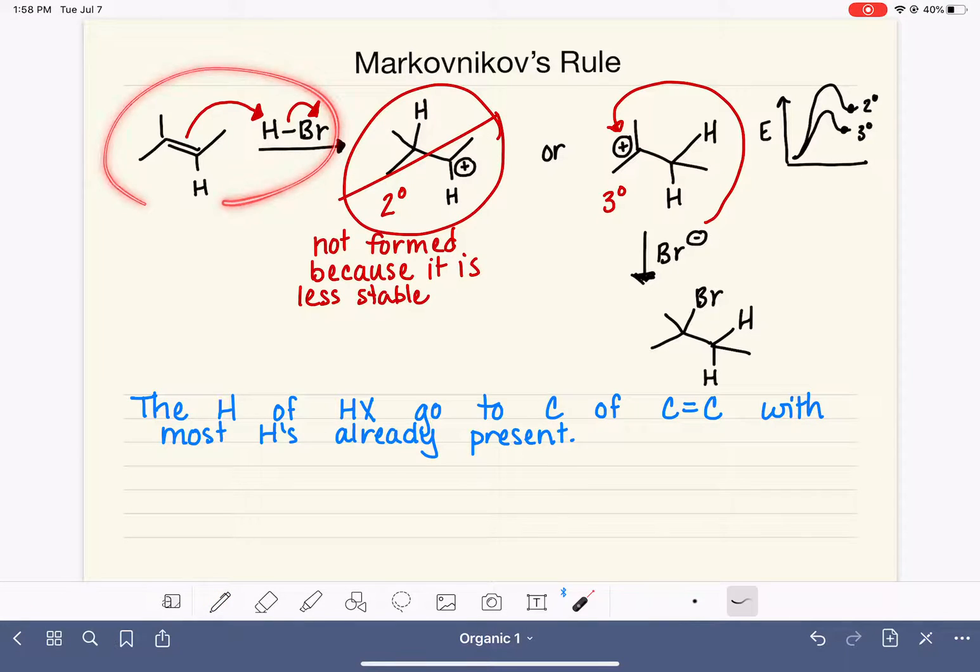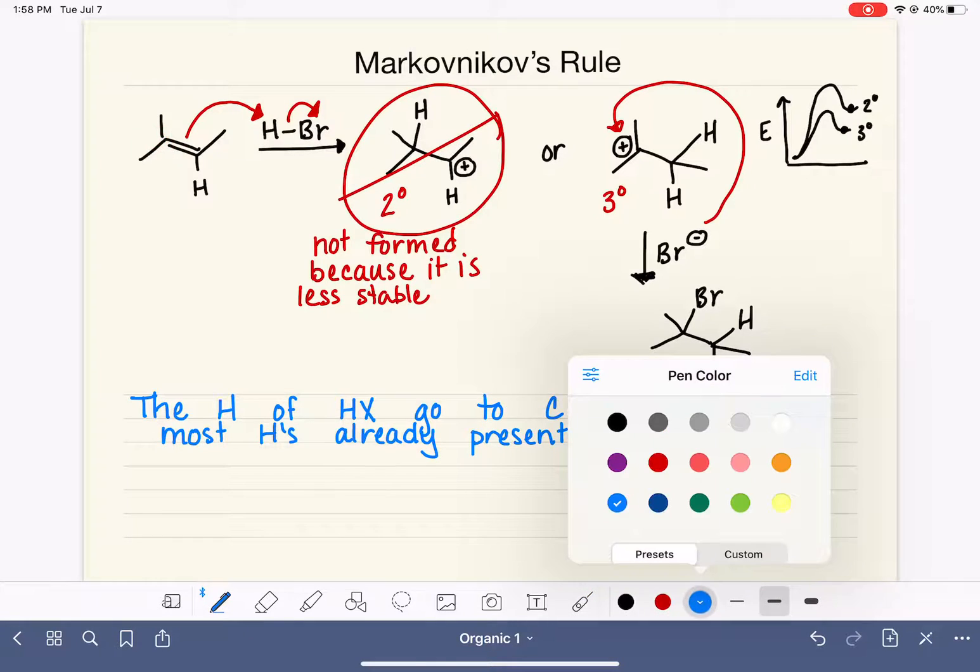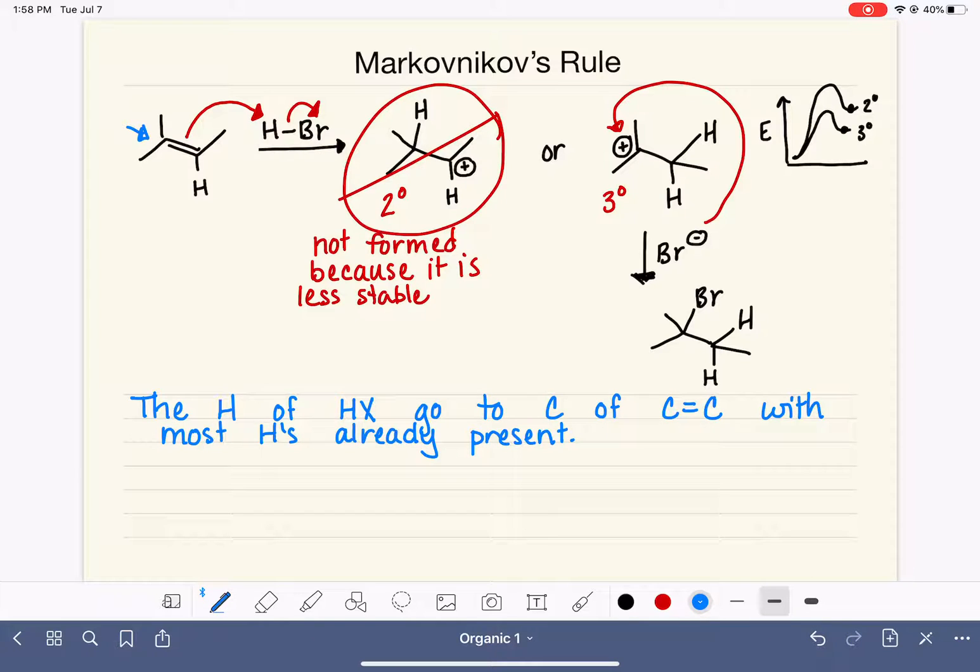The hydrogen of the HX goes to the carbon of the double bond with the most hydrogens already present. So let's apply that to this up here. Of our two carbons, this carbon has zero hydrogens attached. We're looking at hydrogens that are attached directly to this carbon. This carbon right here has one hydrogen. So this carbon has more hydrogens than this one. And that tells us that the hydrogen of HBr is going to go ahead and add itself to this particular carbon. The hydrogen with one, the carbon with one hydrogen, the most hydrogen gets the new one. So HBr's hydrogen goes here, which is exactly what we observe when we form the most stable carbocation.